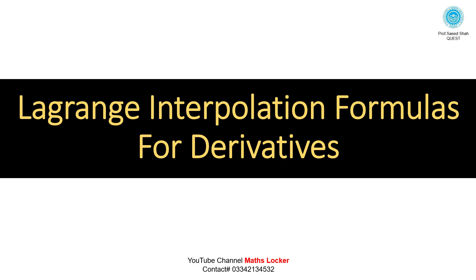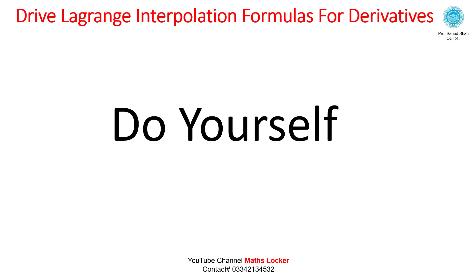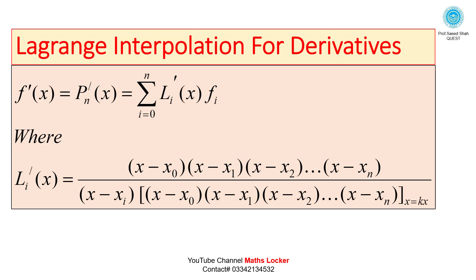For an Unequal Length of Interval, the solution uses Long-Range Interpolation Formulas for Derivatives. The Long-Range Interpolation Formula for the first derivative is: f'(x) = p'(x) = summation i goes from 0 to n of li'(x) times fi, where li'(x) is calculated by a specific formula.